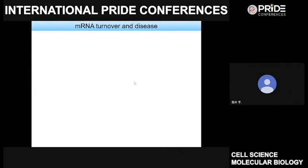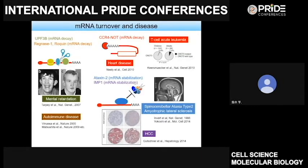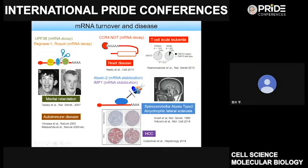Here I explain the biological significance of mRNA abundance regulation, and we show examples of the relationship between mRNA regulation and human disease. UPF3B and regnase-1 are molecules involved in mRNA decay, targeting aberrant mRNAs or cytokine mRNAs respectively. When functions of these molecules are impaired, abnormal proteins or inflammatory cytokines are overproduced, resulting in development of neurodegenerative disease or autoimmune diseases.